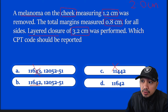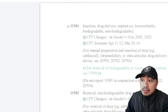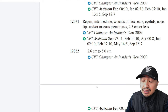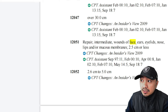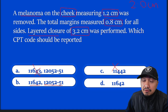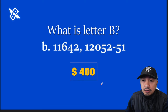Check the size and site for the repair: the cheek repair of 3.2 cm falls under code 12052. Add modifier 51 to indicate multiple procedures. The answer is 11642 plus 12052 with modifier 51 — that's letter B. Congratulations for getting $400.